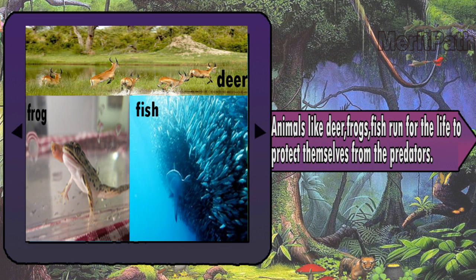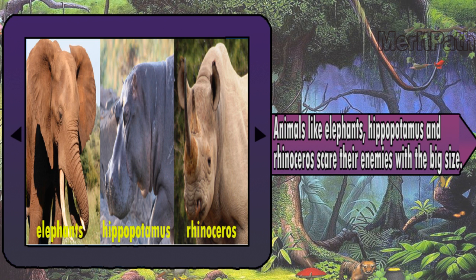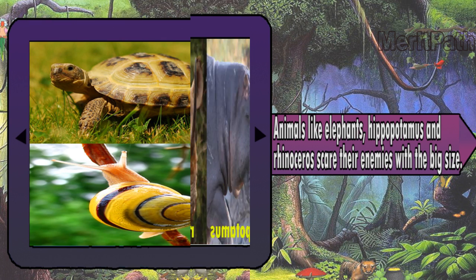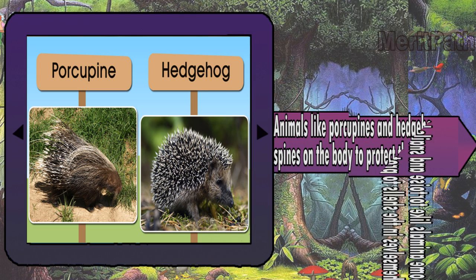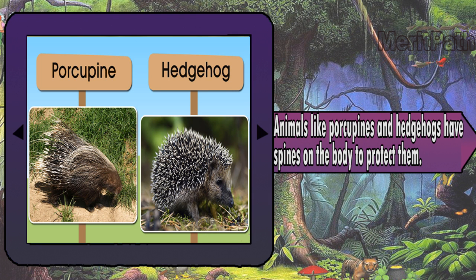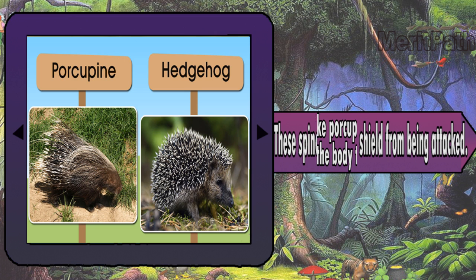Animals like deer, frogs, and fish run for their lives to protect themselves from predators. Animals like elephants, hippopotamuses, and rhinoceroses scare their enemies with their big size. Some animals like tortoises and snails hide themselves in their shells to protect themselves. Animals like porcupines and hedgehogs have spines on their bodies — these spines act as a shield from being attacked.